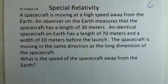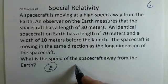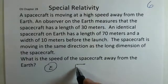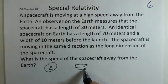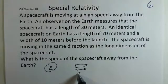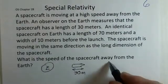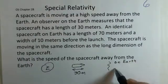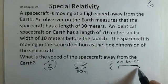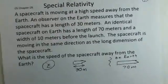What's the speed of the spacecraft away from the earth? We should make a sketch of what's happening here. We have a spacecraft, and from the point of view of someone on the earth, the spacecraft is 30 meters long. Where it started on earth, the spacecraft is 70 meters long.